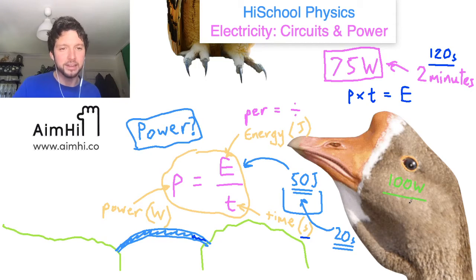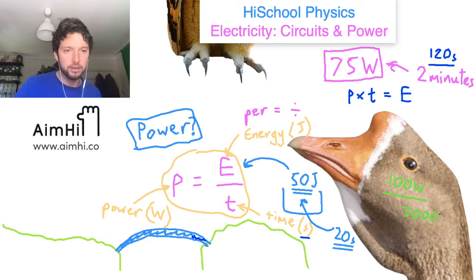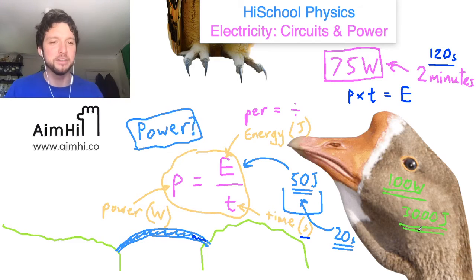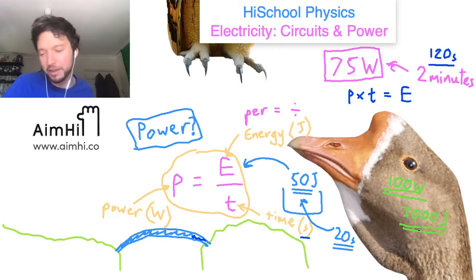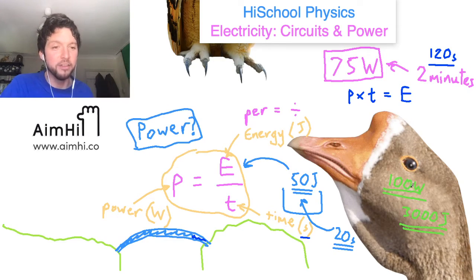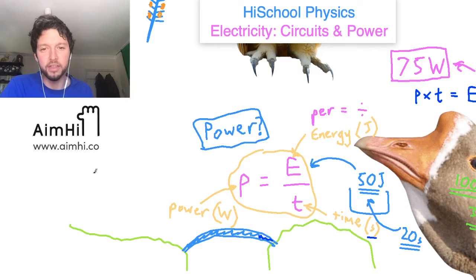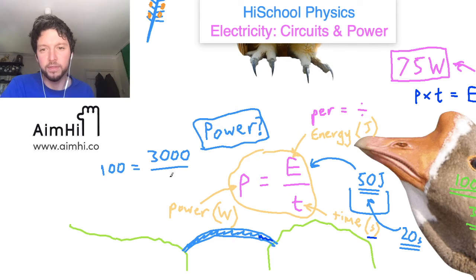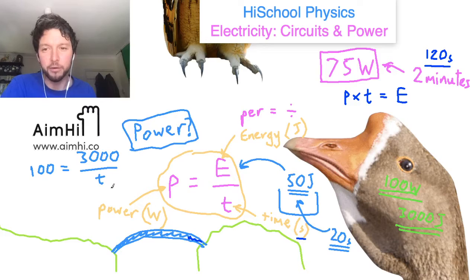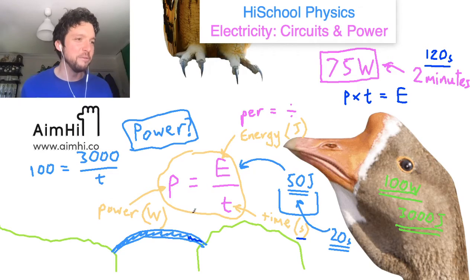One more: a goose cooks on a 100-watt oven and wants to transfer 3,000 joules — how long does it need to cook for? If power = energy divided by time, rearranging gives time = energy divided by power: 3,000 divided by 100 equals 30 seconds.